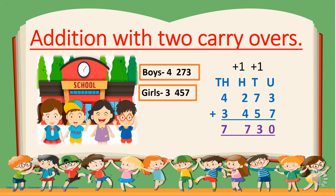Units column you can keep — the maximum value is 9. Tens column maximum value is 99. Hundreds column 999. See the answer from the first 3 columns — Hundreds, Tens and Units — that is 730, which is smaller than 999. So then let's move to the thousands: 4 plus 3 is 7. So the final answer is 7,730.